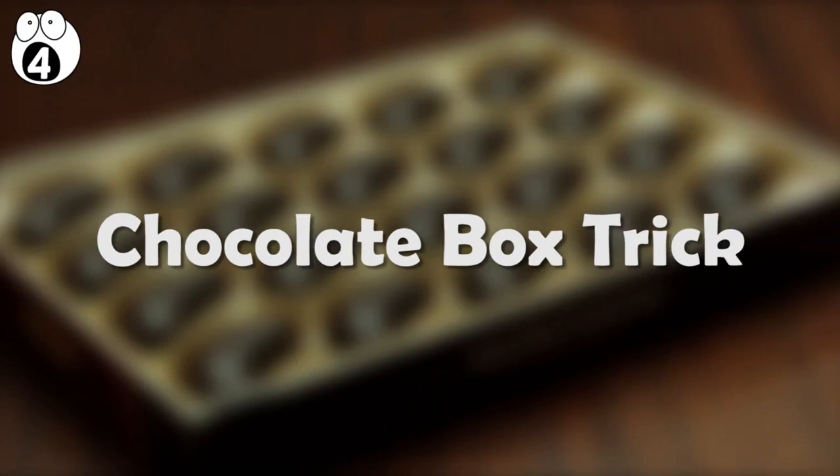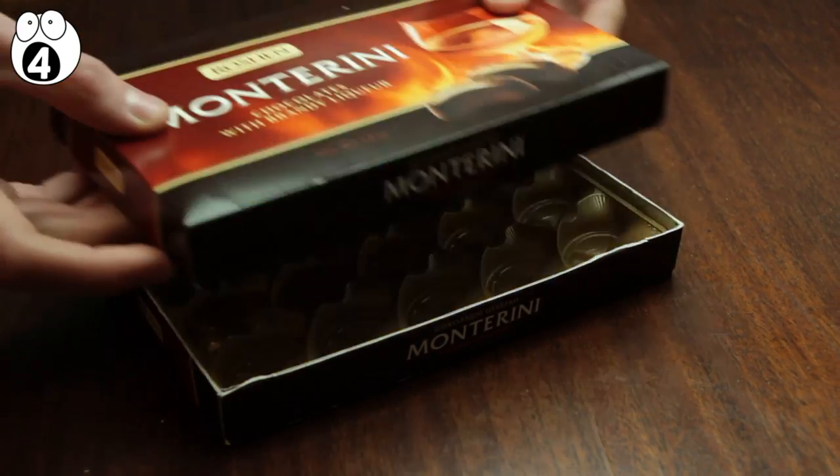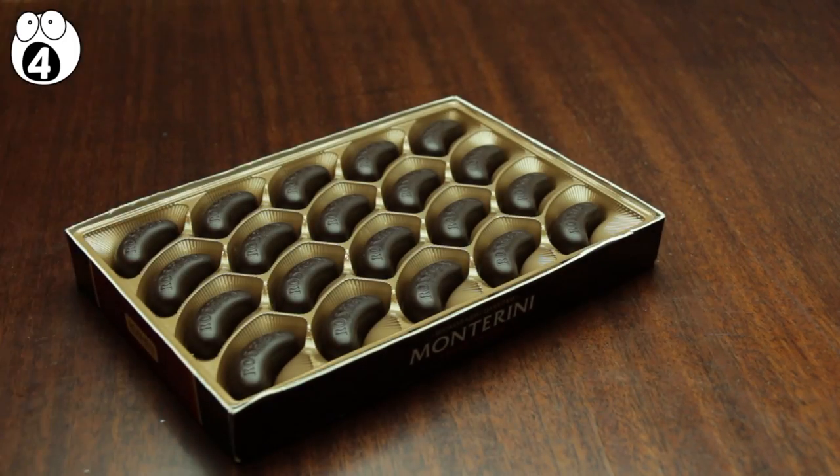Number 4, chocolate box trick. This one's perfect to impress a date with. Show them an empty chocolate box and then place the lid back on it. Take the lid off and the chocolates are restored.